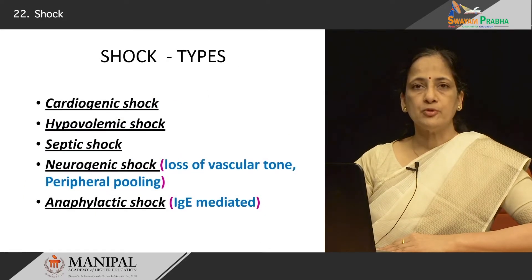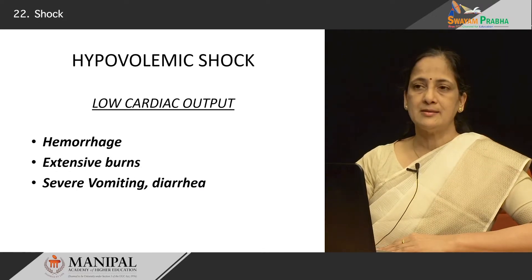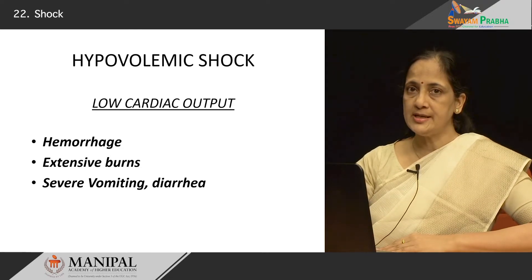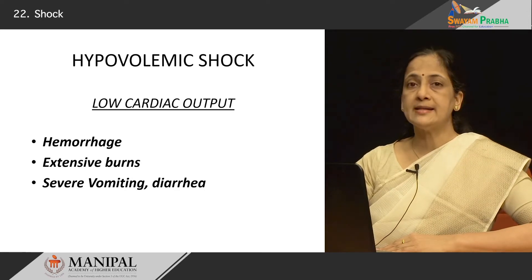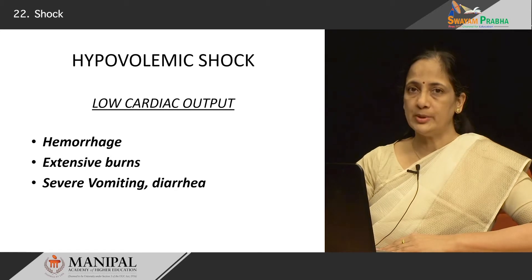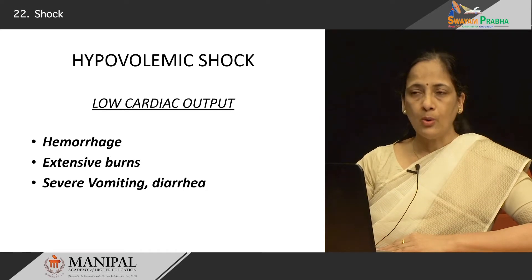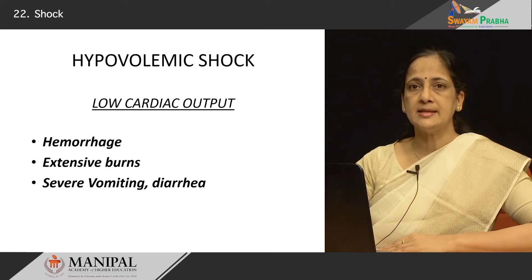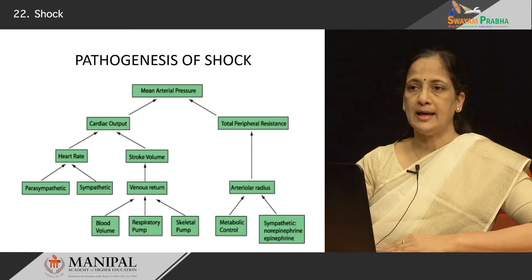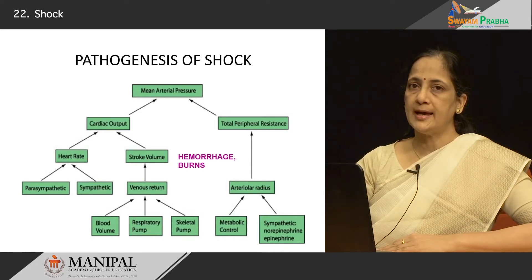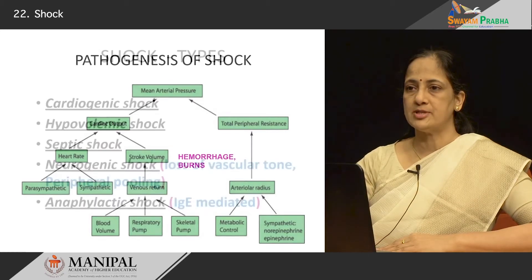The second type of shock is hypovolemic shock. Here again, the main mechanism is low cardiac output. When does this occur? If a patient has massive hemorrhage — for example, a road traffic accident causing massive blood loss — or extensive burns where fluid oozes out from the surface of damaged skin resulting in hypovolemia, or severe vomiting and diarrhea due to any cause — all these patients will have a net decrease in intravascular fluid volume. Therefore, stroke volume comes down, cardiac output drops, arterial pressure drops, and the pathogenic mechanism proceeds.